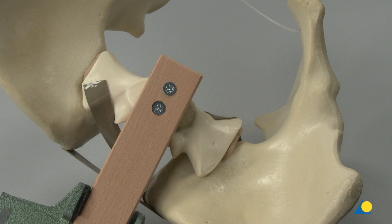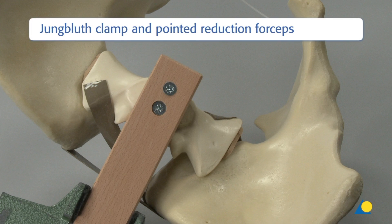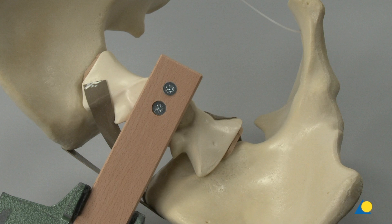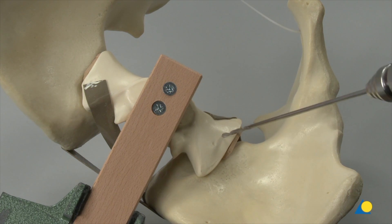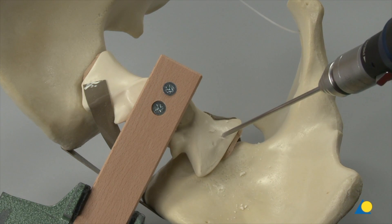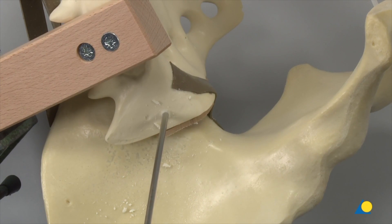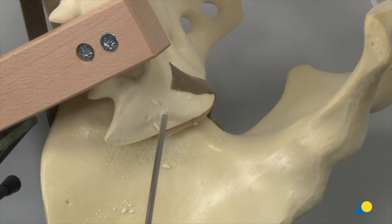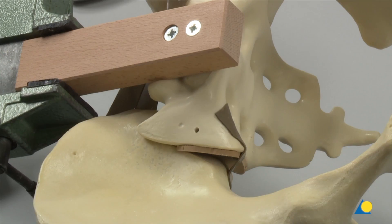Reduction using a Jungblut clamp and the pointed reduction forceps. Expose the lateral part of the sacral ala and drill a 3.2 mm hole respecting the spatial orientation of the sacro-iliac joint. The position of this hole should allow later plate placement proximally and distally to this anchoring screw.